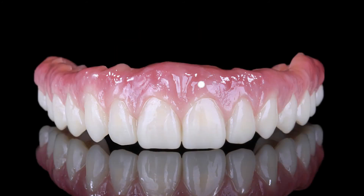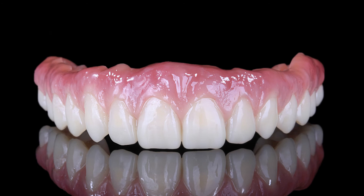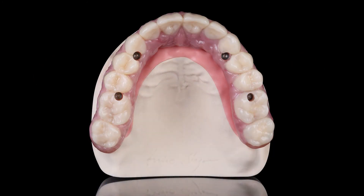With the double screw metal technique, it is therefore possible to produce highly stable, bar-supported rehabilitations even in complex cases, without compromising full arch aesthetics.